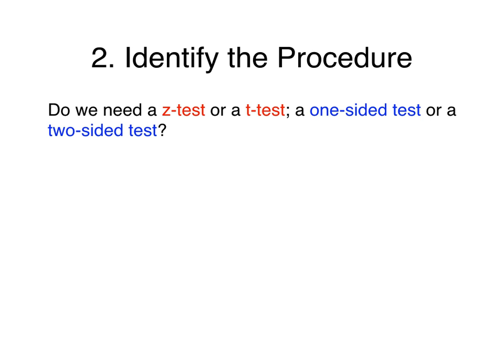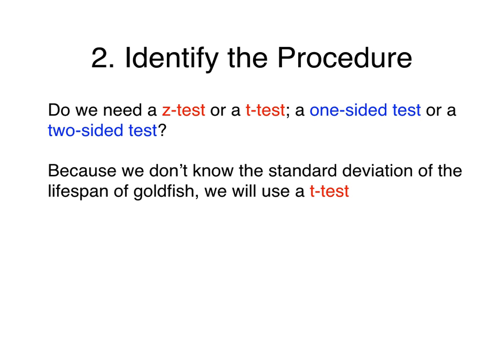Next, we must identify the procedure needed to solve the problem — specifically, whether to use a z-test or a t-test. A z-test is used when we know the standard deviation of the population, while a t-test is used when we don't. In this case, because we don't know the standard deviation of the lifespan of goldfish, we will use a t-test.